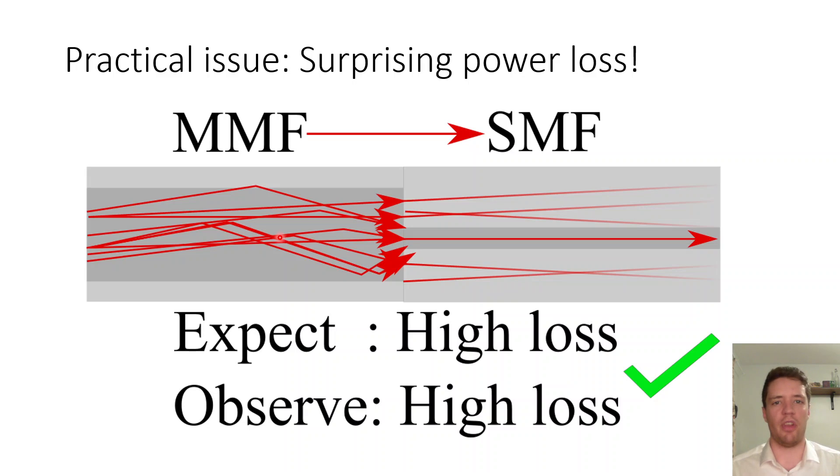For example if we send light from a multimode fiber into a single mode fiber then if the ray picture is correct we'd expect quite high attenuation because it's a little bit like taking a large bucket of water and trying to pour that into a garden hose. Of course we expect to miss because the diameters are mismatched between these two receptacles and of course we see the same thing for optical fibers if we try this experiment.